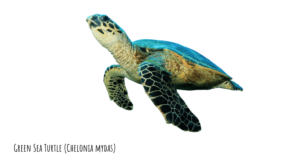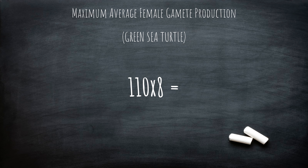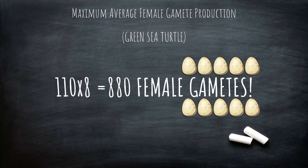Sea turtles are an example of Oviparous internal fertilization. The female and male turtle will meet at a particular time of the year, usually traveling substantial distances in order to copulate. On average, sea turtles lay 110 eggs in a nest, an average of 2 to 8 nests a season, meaning sea turtles lay up to 880 eggs per season. Turtle eggs are laid onshore underneath the sand, allowing for less risk of predation whilst offspring are developing. Due to turtles being Oviparous, less male gametes are required, seeing as fertilization occurs inside the female.